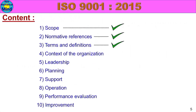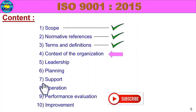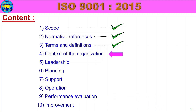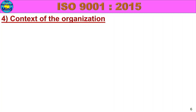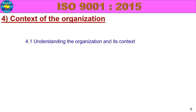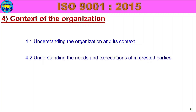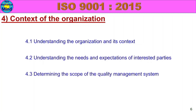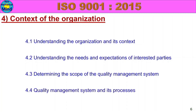In this video, we will see ISO 9001:2015 in the 4th class, Context of the Organizations. This video will be very useful. Let's go to training. Context of the Organizations. In this video, there are 4 subclasses: 4.1 Understanding the organization and its context; 4.2 Understanding the needs and expectations of interested parties; 4.3 Determining the scope of the quality management system; 4.4 Quality management system and its processes.